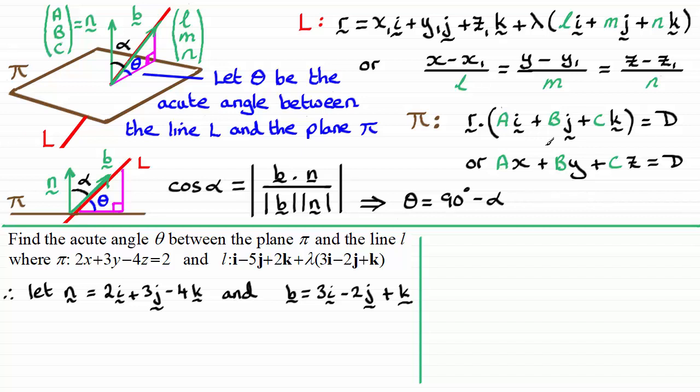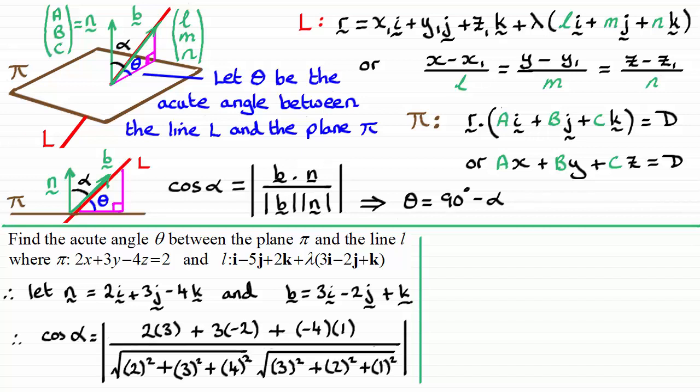Now I've just got to use this formula here. And you can use it, by the way, as N dot b over the magnitude of N times the magnitude of b. It obviously doesn't matter which way round you do it, as this is commutative. So if I work out cosine alpha, then you can see I've done N dotted with b. 2 times the 3 plus 3 times the minus 2 plus negative 4 times the 1 here. And that's all over the magnitude of each of the two vectors, N and b.